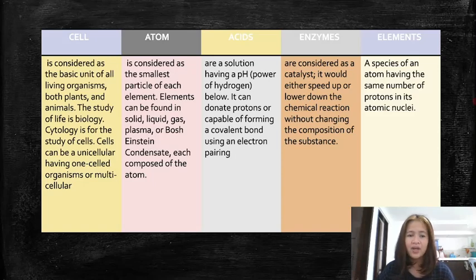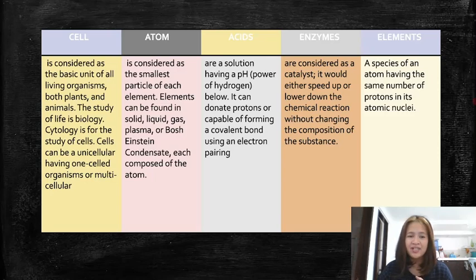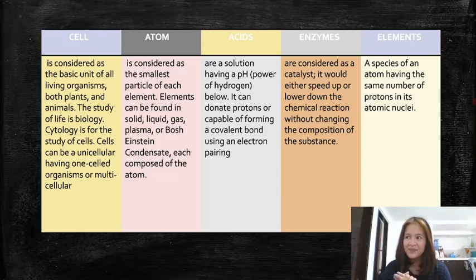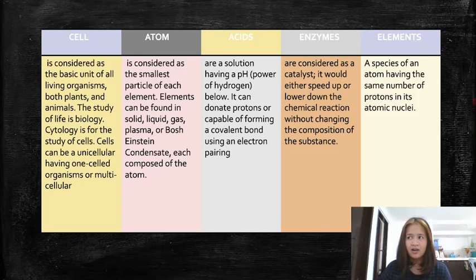The study of life is biology. Cytology is the study of cells. Cells can be unicellular, having one-celled organisms, or multicellular. An example of a cell is a unit in the tissue of an animal's muscles. A human body is composed of trillions of cells, all with their own specialized functions.